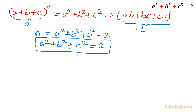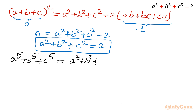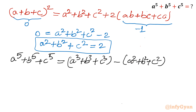Now putting our values into the required expression: A⁵ + B⁵ + C⁵ = (A³ + B³ + C³) - (A² + B² + C²) = (-3) - (2) = -5. So the answer is -5.